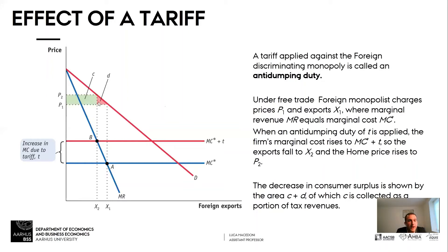What is the effect of this? It increases the price from P1 to P2, because we have a new equilibrium given by the intersection between the MC* plus T curve and the marginal revenue curve — which did not change — at point B.